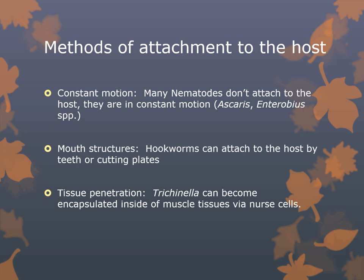There are several methods of attachment that the roundworm uses to connect to the host. Some do not attach at all and are in constant motion, such as Ascaris and Enterobius species. Some worms have mouth structures — hookworms can attach to the host by teeth or cutting plates. Finally, we have tissue penetration, where Trichinella can become encapsulated inside muscle tissue via what's known as a nurse cell.